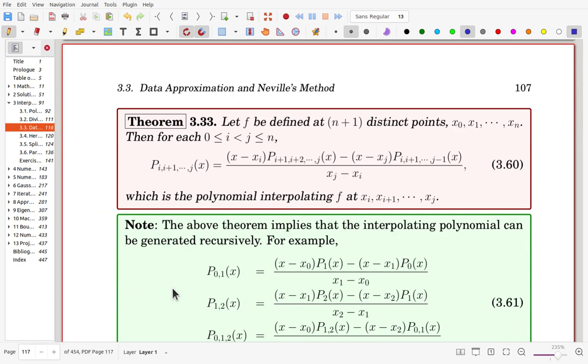Here we have a theorem. It is by Neville. f is defined at n plus 1 distinct points, x0 to xn. Then, for each i,j, j is larger than i. Here, Pi to j, that means that the interpolating polynomial using the point xi, xi plus 1, up to xj, and evaluated at x. The value can be made in this way.